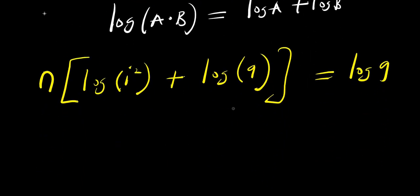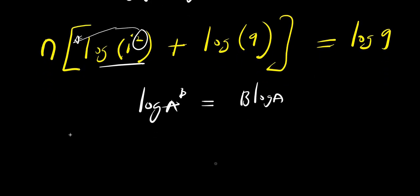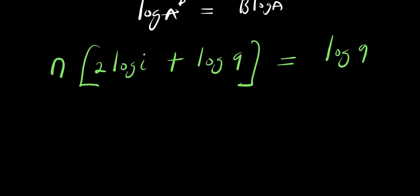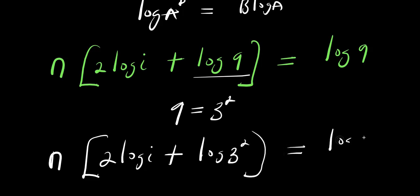Now remember we still have log a to the power of b right here, so this is just like writing b times log a. So the 2 here will come in front. That means we are simply going to have n times 2 times log i plus log 9, and this equals log 9. We can also express log 9 as log 3 squared, since 9 is 3 squared. So we have n times 2 times log i plus log 3 squared equals log 9.